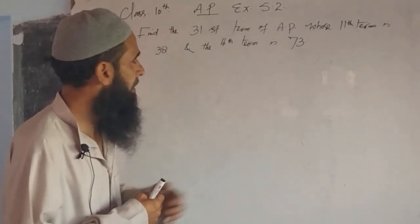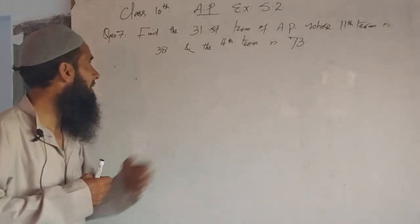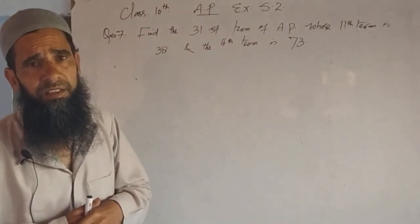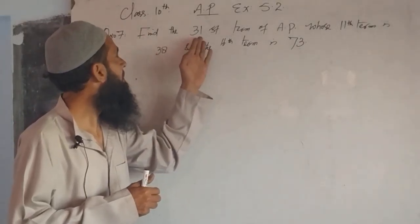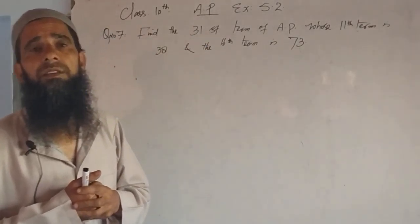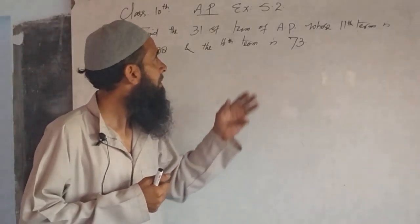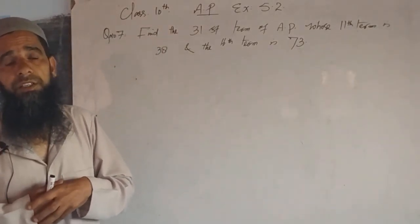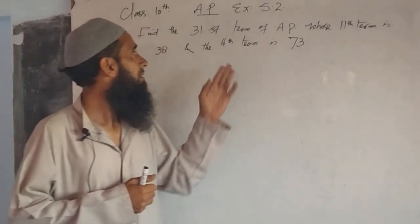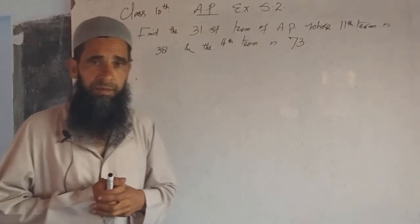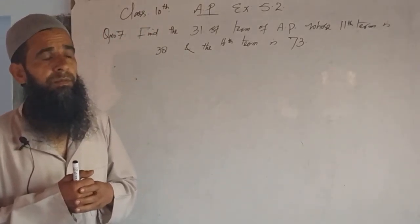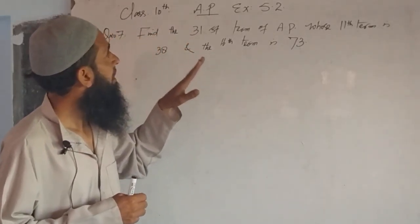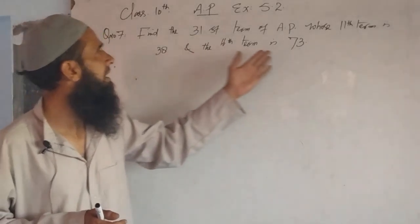We will find the 31st term of a given arithmetic progression, whose 11th term is 38 and 16th term is 73. So we need to find the 31st term of this AP, given the 11th and 16th terms respectively as 38 and 73.